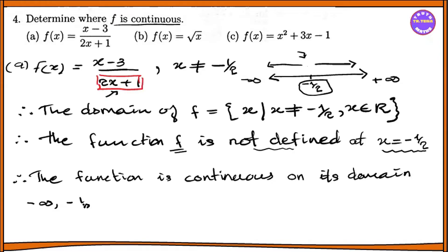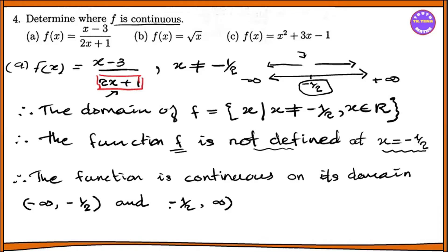The domain is expressed as: negative infinity to minus 1/2 open interval, union minus 1/2 to 0 open interval, union 0 to positive infinity open interval. Minus 1/2 is the open interval boundary. The function is continuous on these intervals: minus infinity to minus 1/2, and minus 1/2 to infinity.